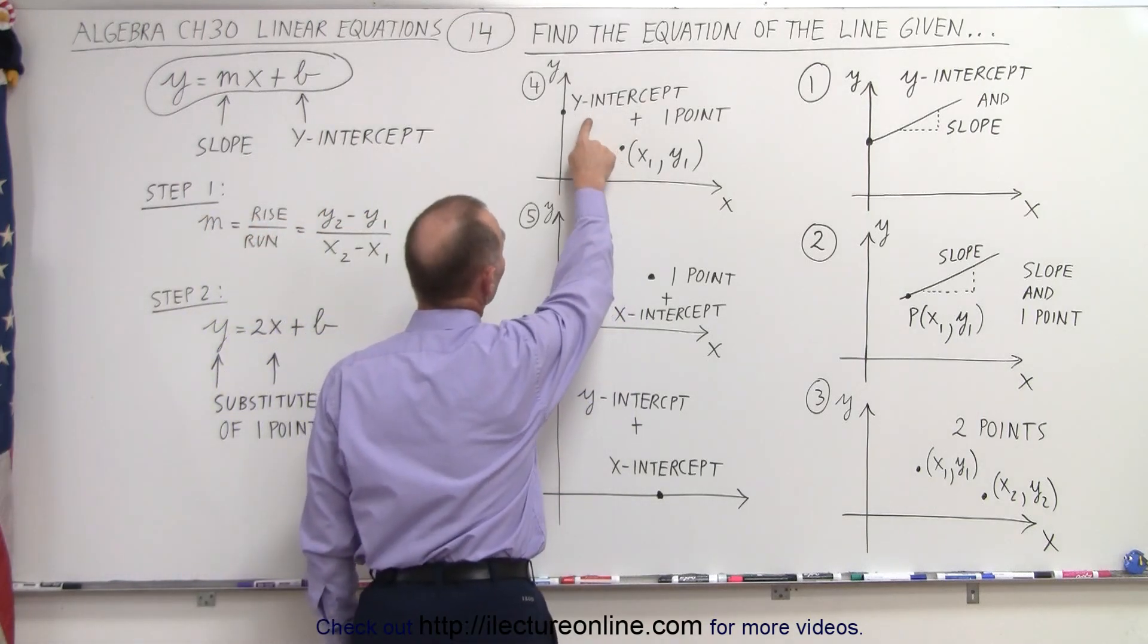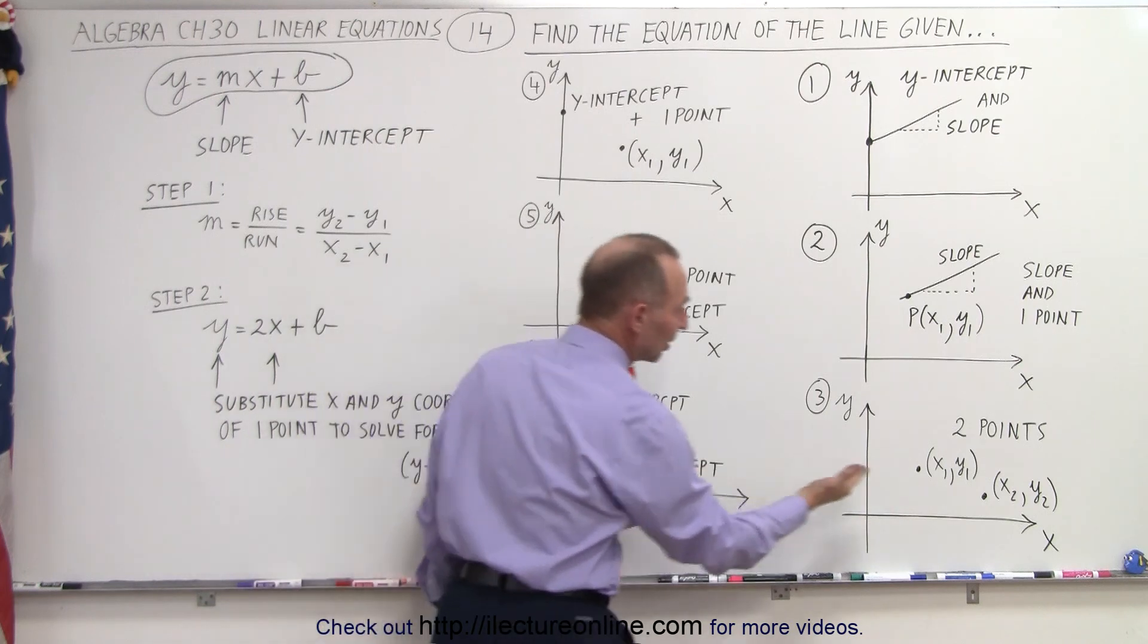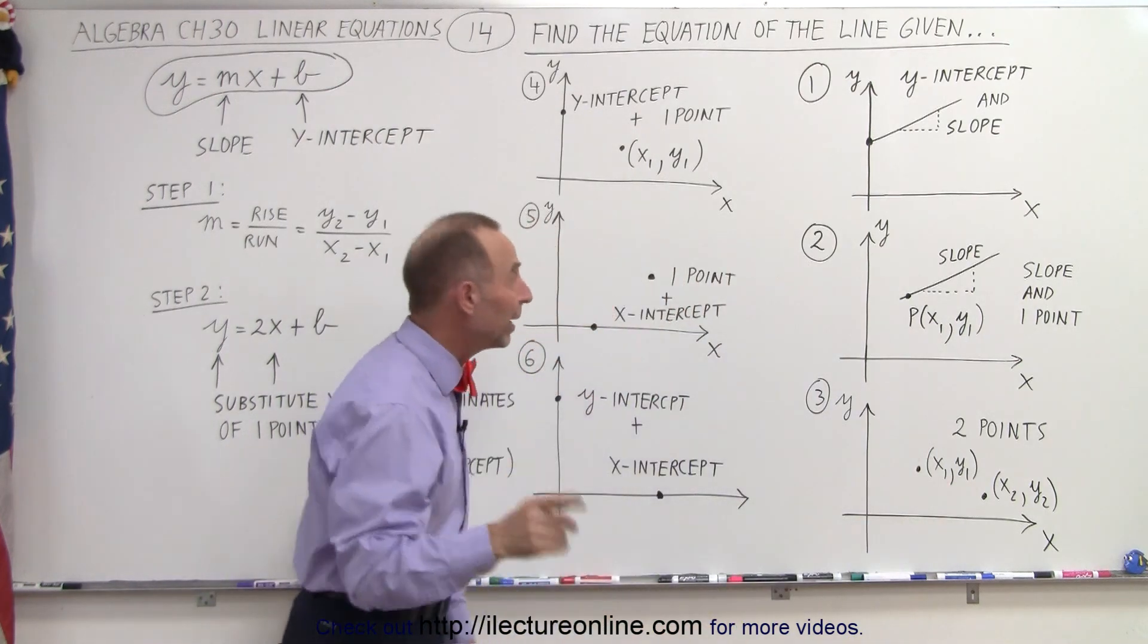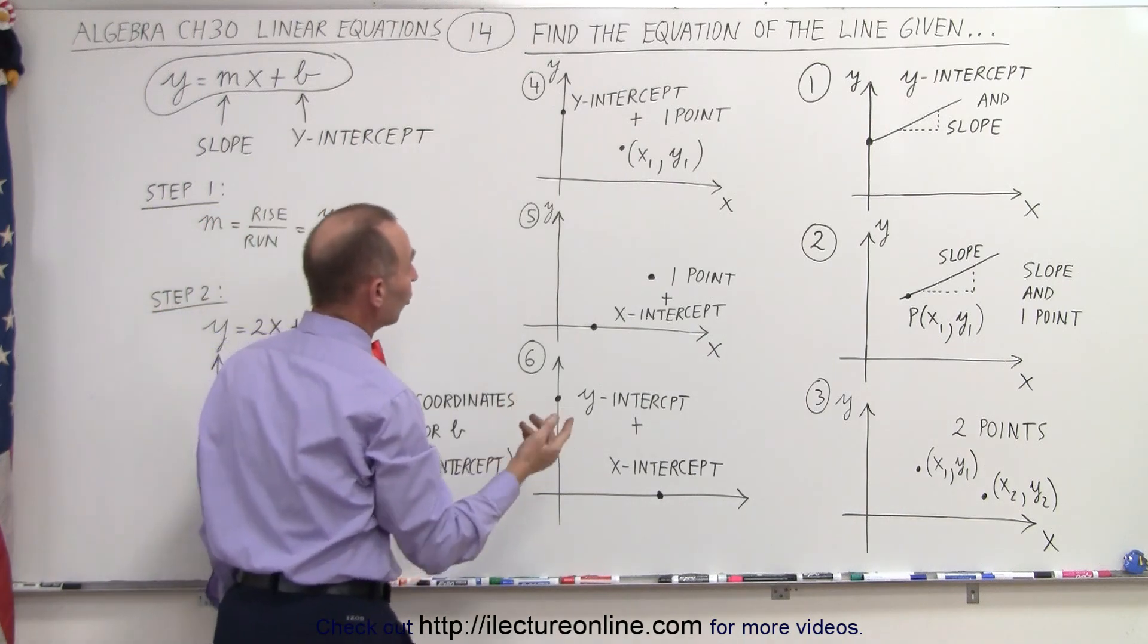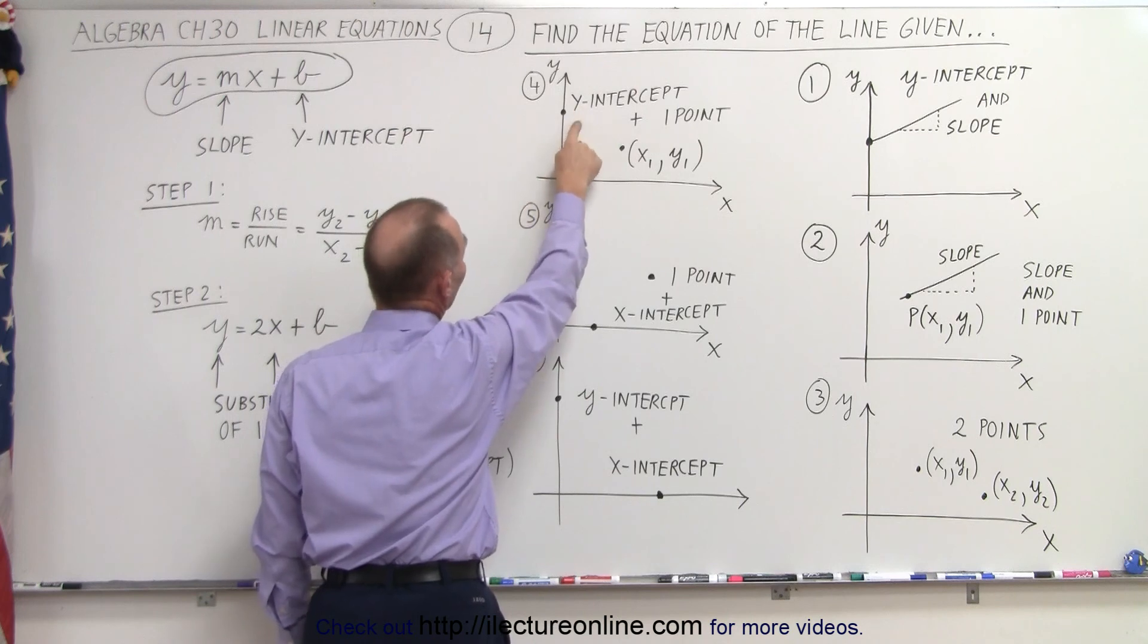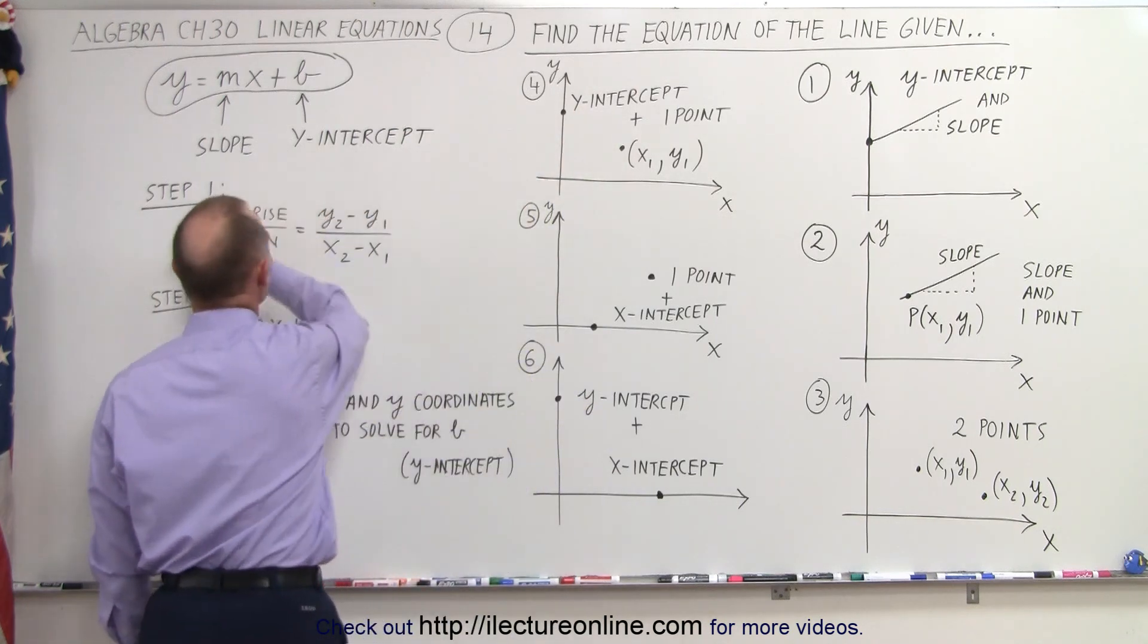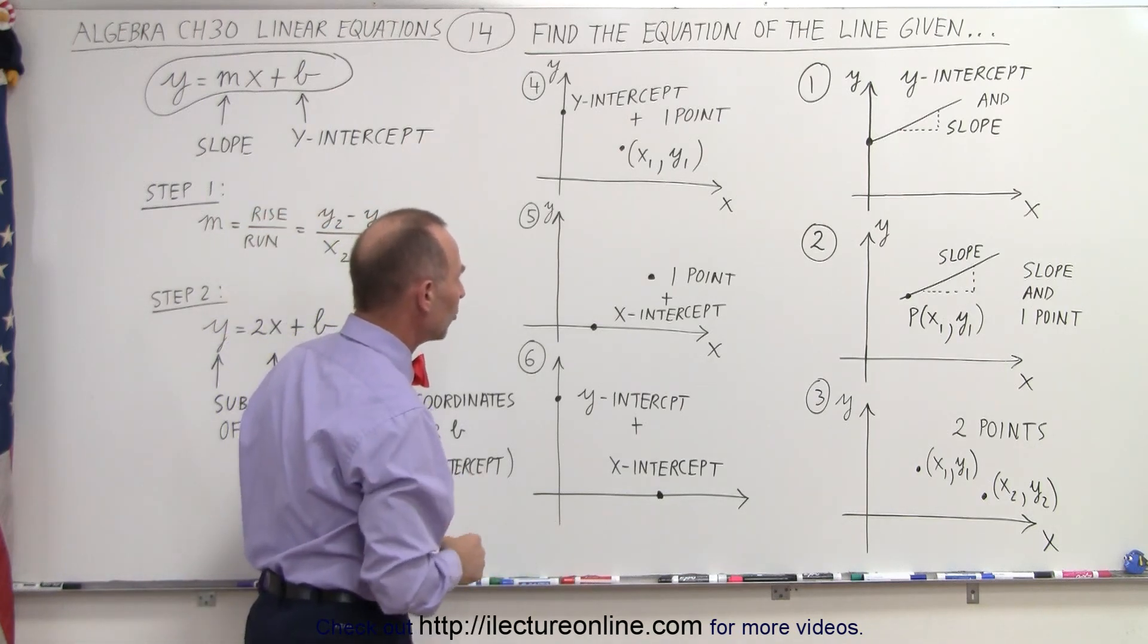If they give you a y-intercept and a point, that's in essence kind of the same thing as given two points, except they already gave you the value for the y-intercept. Then to find the slope, you simply take the x and y coordinates of these two points, the y-intercept and the other point that's given to find the slope, and then you find the m and b for that equation.